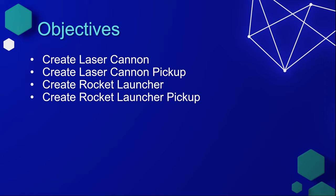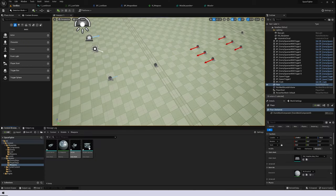The objectives for this lesson are to create a laser cannon class, then create a laser cannon pickup, and set it up so that when the player collects that pickup, it adds an additional weapon to their weapon array. Once that's set up, we're going to create a rocket launcher class — another type of weapon the player can collect — and then get the rocket launcher pickup set up for that.